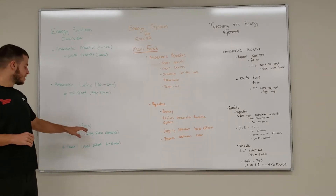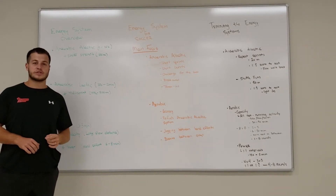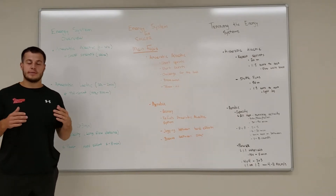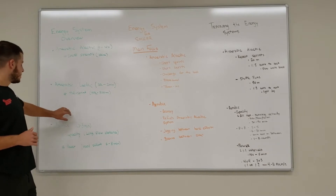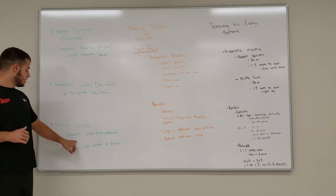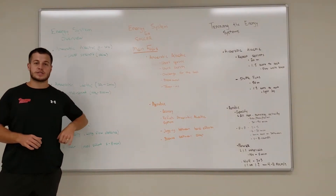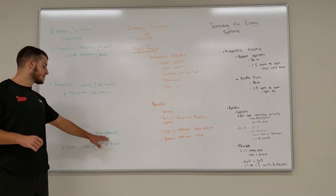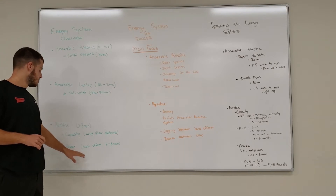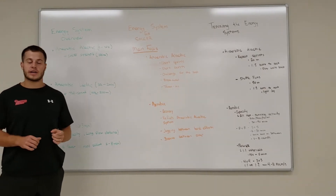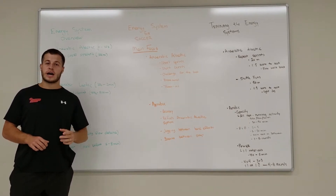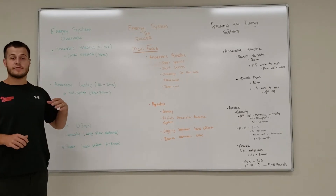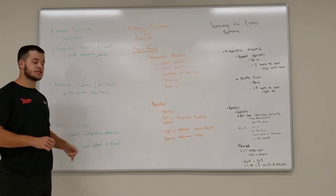Then we have our aerobic system — that's anything longer than three minutes. Think of athletes like marathon runners, triathletes, anybody doing things for a long period of time with repeated efforts. That's separated into capacity and power. Aerobic capacity is our long, slow distance — marathon runners, triathletes, distance swimmers. Aerobic power is a hard effort for around five to eight minutes, like running a one or two kilometer time trial. It's still tough, but we've got oxygen as our primary fuel source.